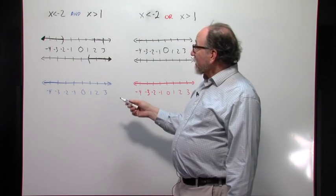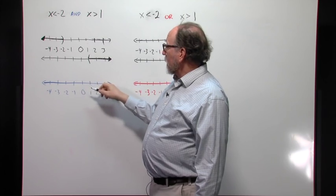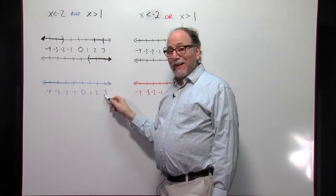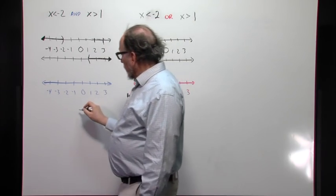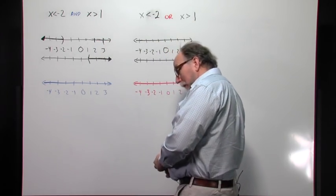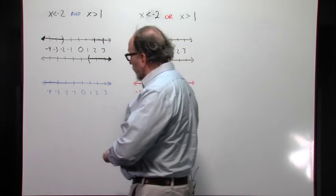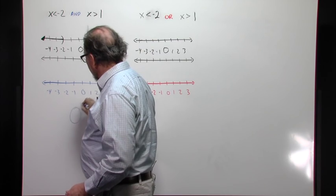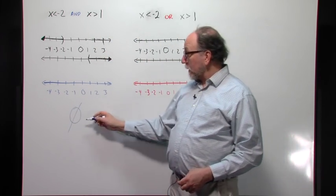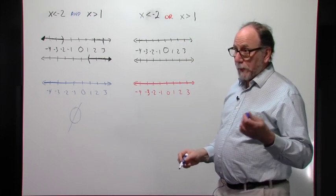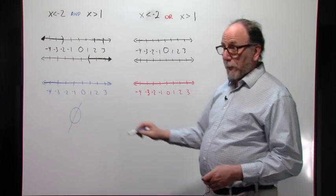So since these both have to be true together, the solution is this graph right here. The empty graph or in interval notation, it can't be written. We write the null set symbol instead which looks like this. There are no solutions to that. And that's the set notation or the best thing we can do for interval notation. That will be a choice on your homework problems.